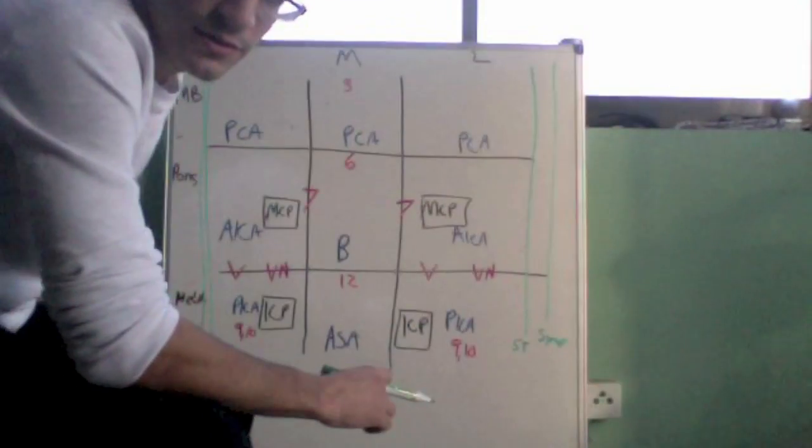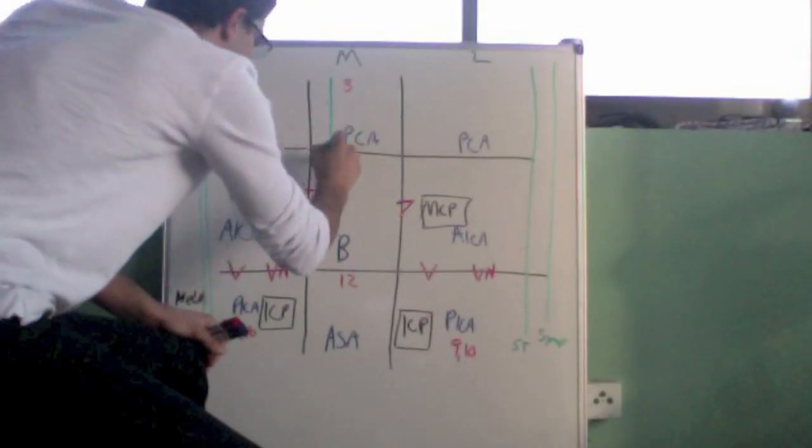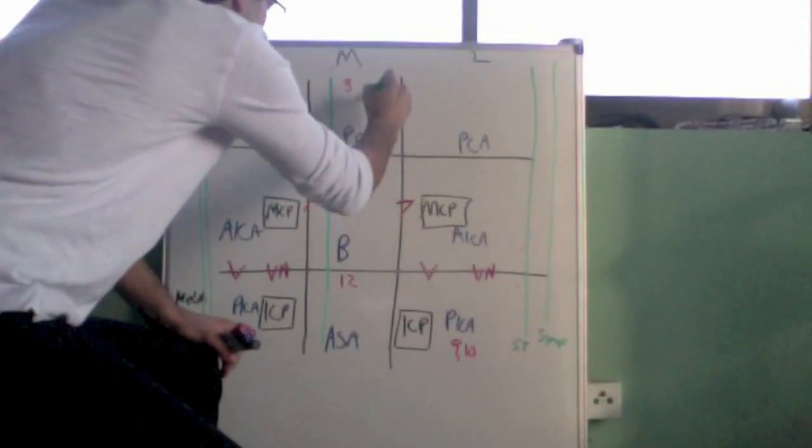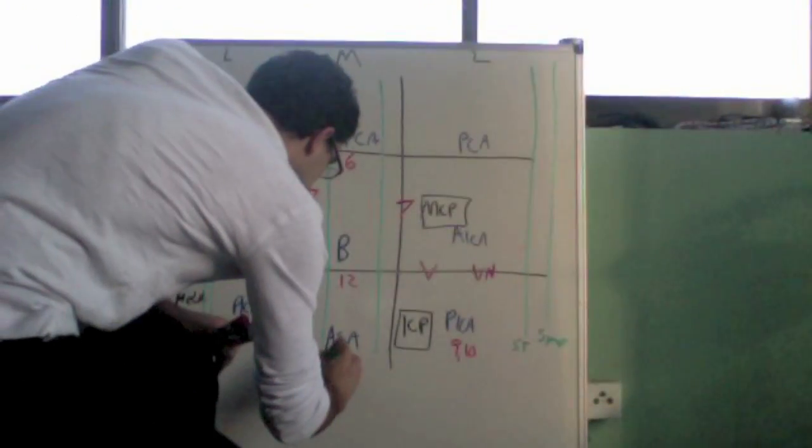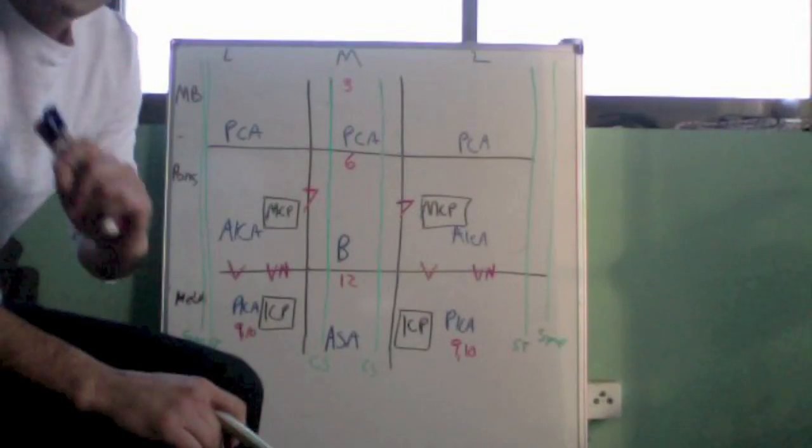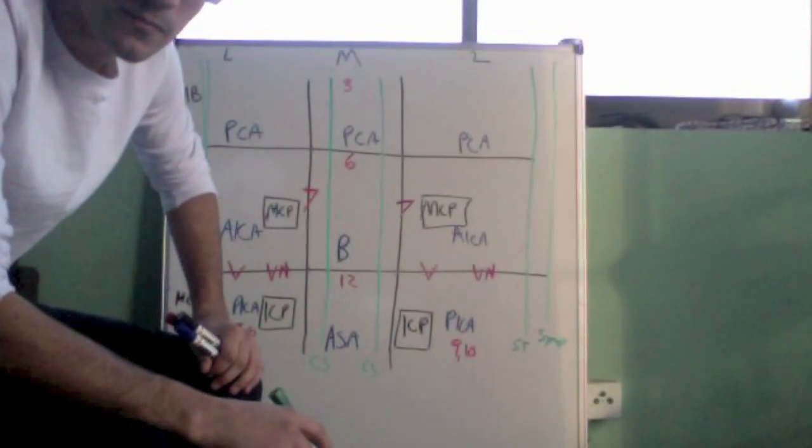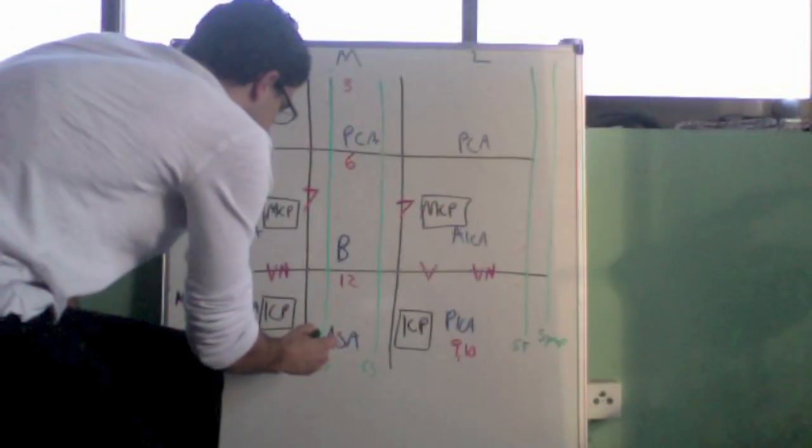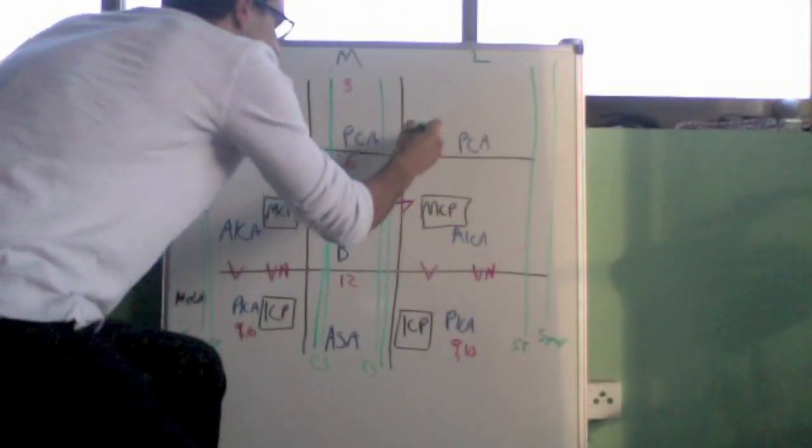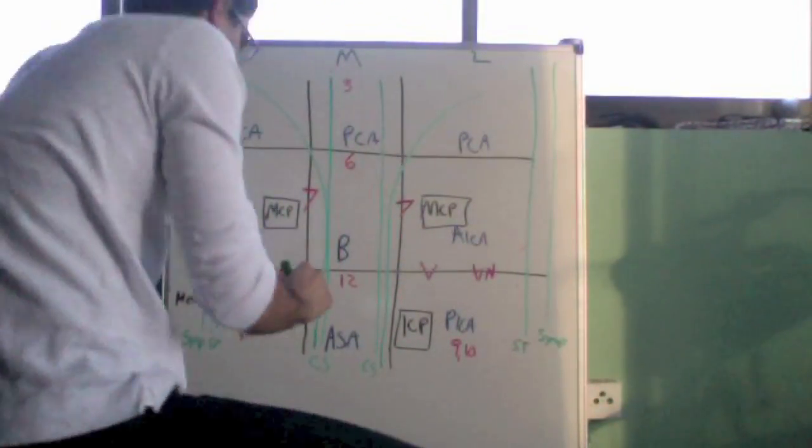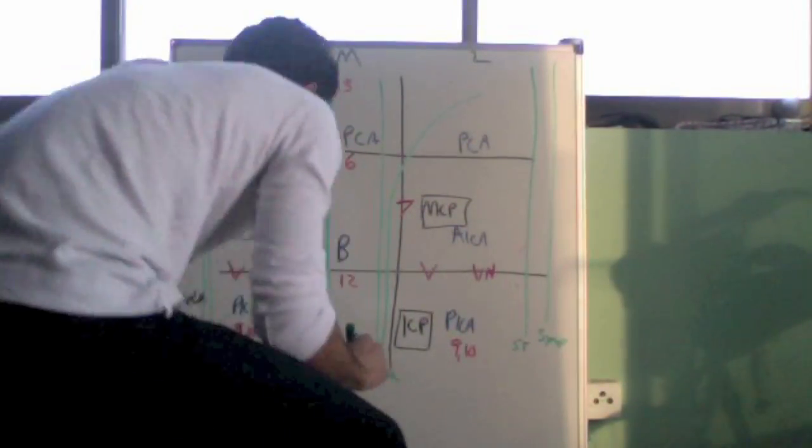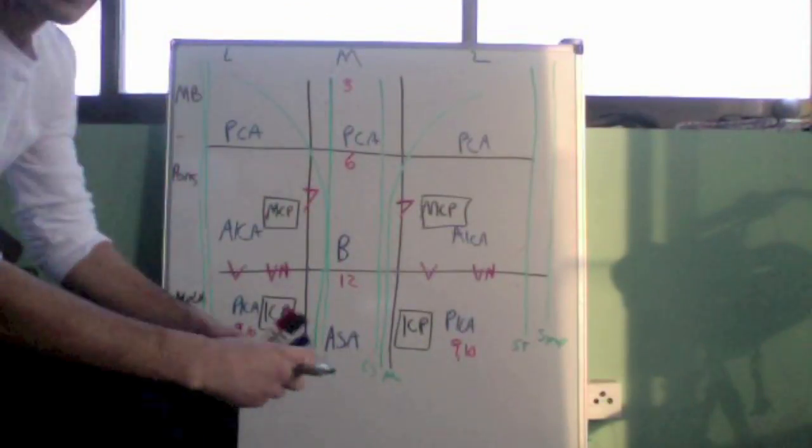Other tracts to do, just quickly, are the corticospinal tract, which runs through the midline. And then you also have the medial lemniscus that starts in the medulla in the midline and then goes laterally, crosses over in the midbrain. So we're going to put medial lemniscus here and corticospinal here.